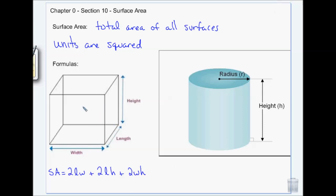Length times height gives you the area of one side, and there are two sides — that's why there's a factor of two. Length times width gives you the area of the bottom, which is the same as the top, so two of those. Width times height gives you the area of the front and the back — two of those as well. Make sure you have this written down.